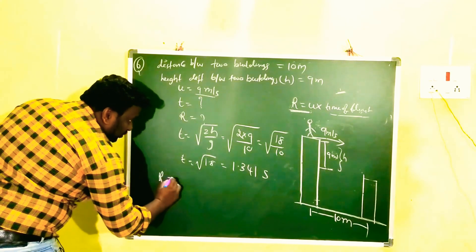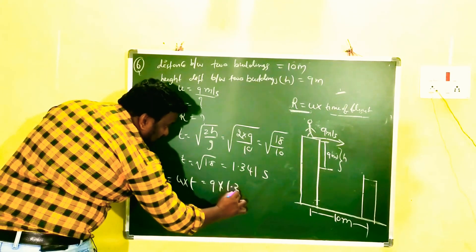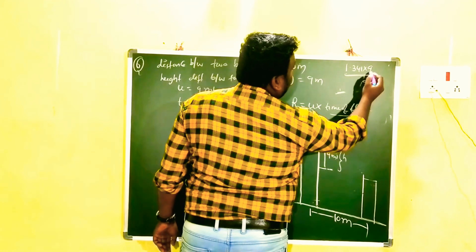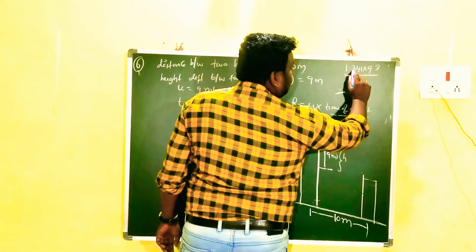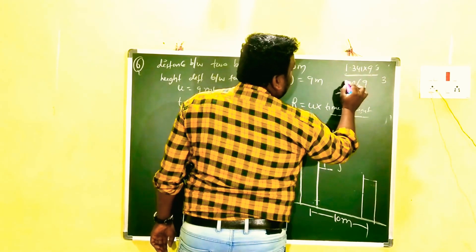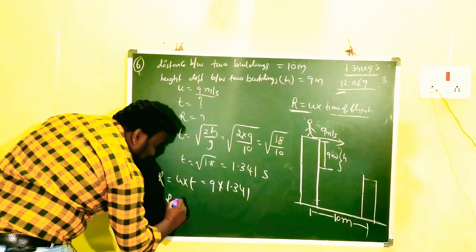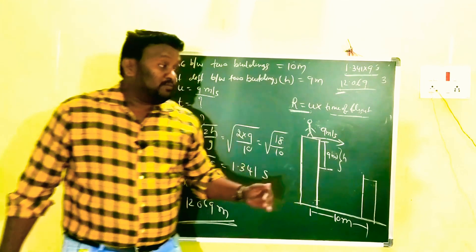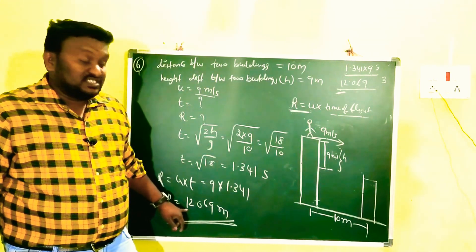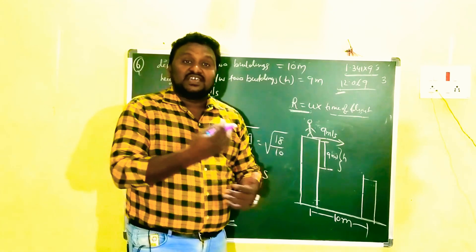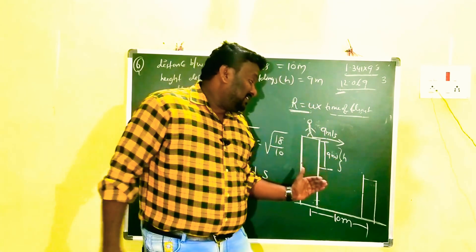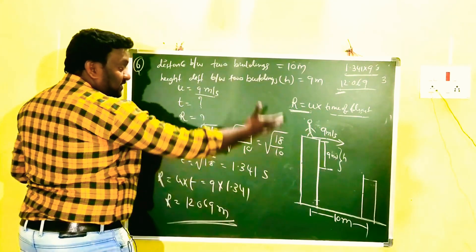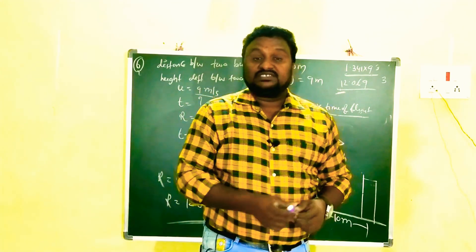Now we find the range: R equals u into t equals 9 into 1.341. Calculating: 9 × 1.341 = 12.069 meters. So the man jumps a horizontal distance of 12.069 meters, which is greater than the 10 meters between the buildings. Therefore, he safely lands on the next building and does not fall between the two buildings. I hope you understand. We will meet in the next video with some other interesting topic. Bye, take care.